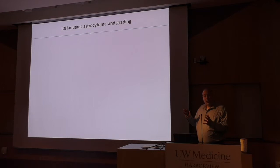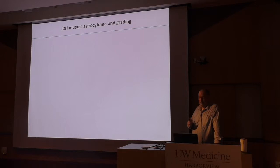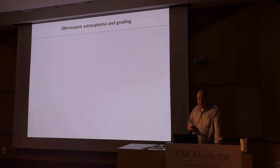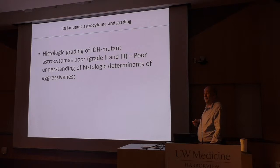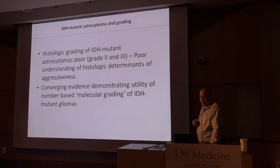Moving on to IDH mutant gliomas — that paper on IDH wild-type gliomas just came out online on PubMed. For IDH mutant gliomas: histologic grading of IDH mutant astrocytomas is poor, our understanding of histologic determinants of progressiveness is bad, and grade 2 versus grade 3 as mentioned earlier is not very predictive of aggressiveness. But we have converging evidence demonstrating the utility of molecular grading of IDH mutant gliomas, largely based on copy number profiling.